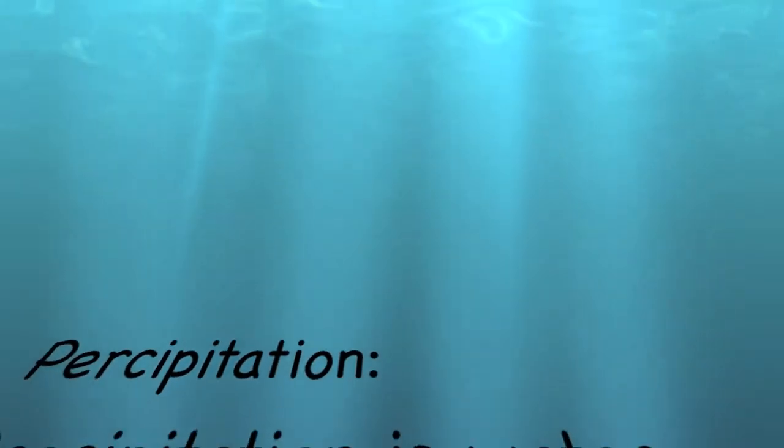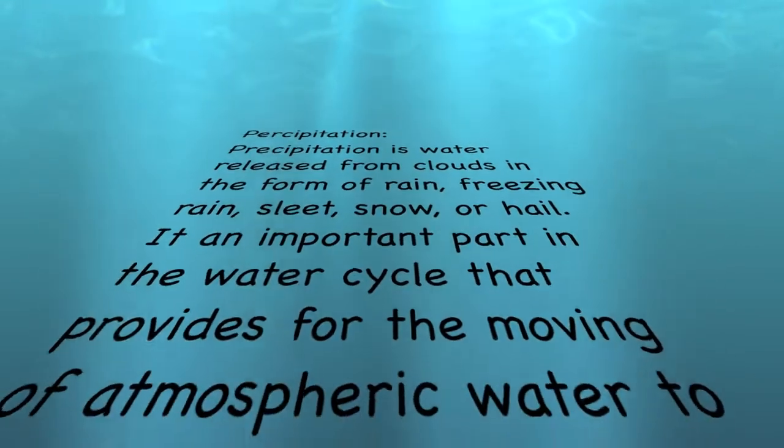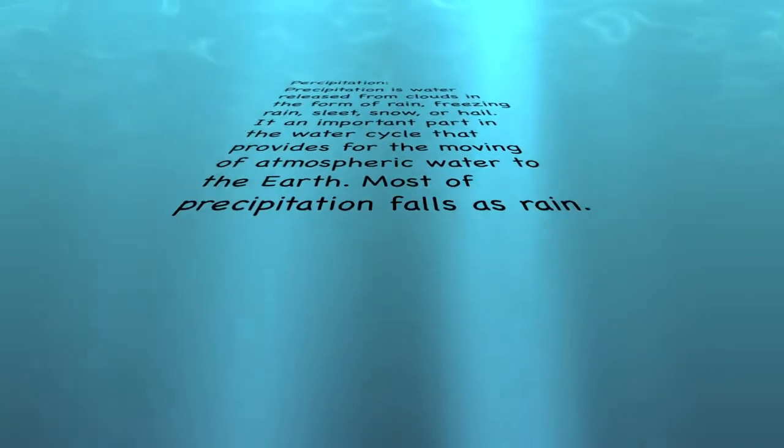Precipitation. Precipitation is water released from clouds in the form of rain, freezing rain, sleet, snow, or hail. It is an important part of the water cycle that provides for the moving of atmospheric water to the earth.